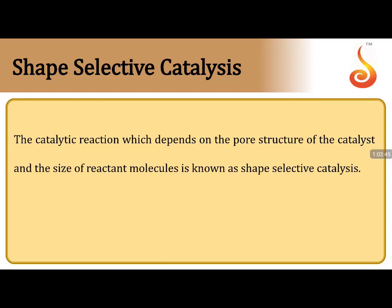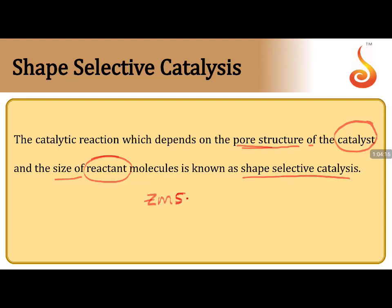Shape-selective catalysis depends on the pore structure of the catalyst and the size of reactant molecules. The pore structure is a property of the catalyst, while size is a property of the reactant molecule — students commonly confuse these. The best example of a shape-selective catalyst is ZSM-5, particularly applicable for dehydration of alcohols.